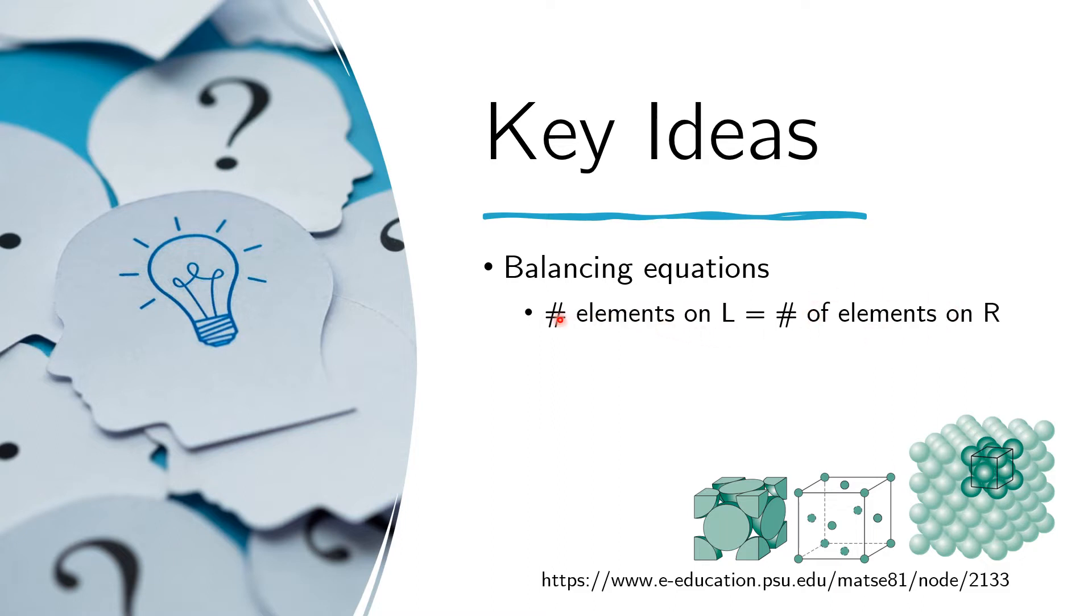So if you have five nitrogens on the left side, you must have five nitrogens on the right side. And we manipulate the coefficients to make sure these numbers match.